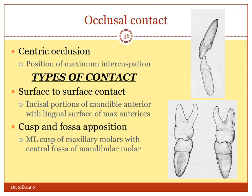The occlusal contact has been described under a term called centric occlusion. Centric occlusion is given to the maximum intercuspation between the maxillary and the mandibular teeth. Whenever the teeth are in contact, there may be surface-to-surface contact, incisal contact, or adjacent teeth contact in the proximal surfaces. The cusp and fossa opposition is also important. The functional cusps of the maxilla are the palatal cusps, whereas the functional cusps of the mandible are the buccal cusps. The palatal cusps of the maxilla occlude with the fossa of the mandibular teeth; the buccal cusps of the mandibular posteriors occlude at the fossa of the maxillary posteriors.